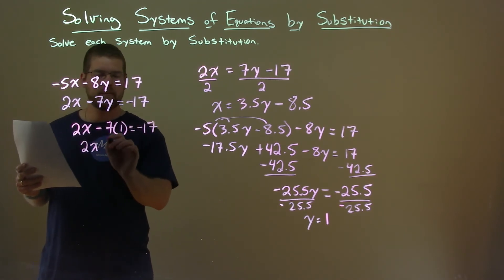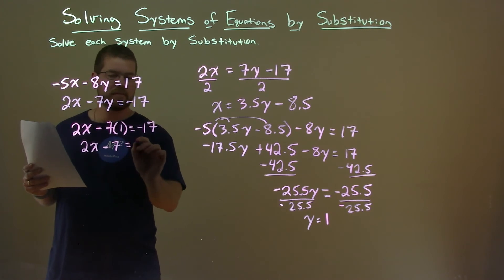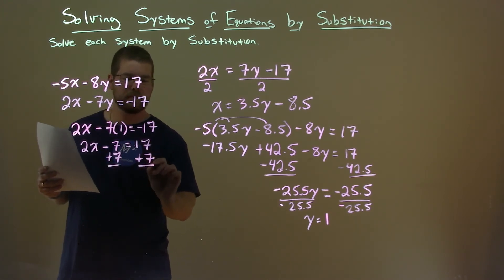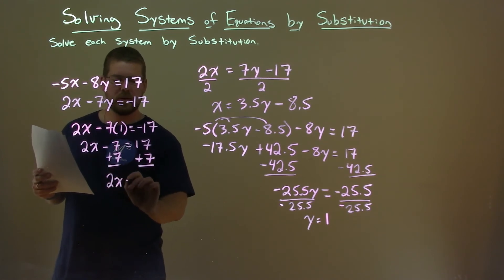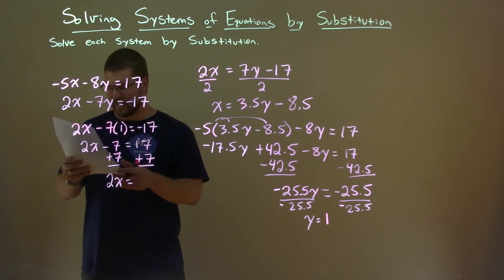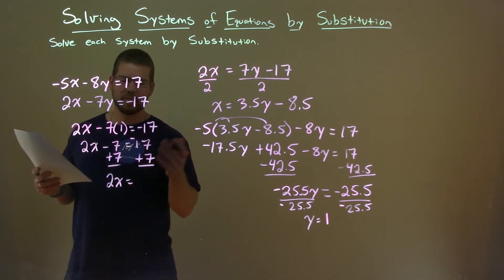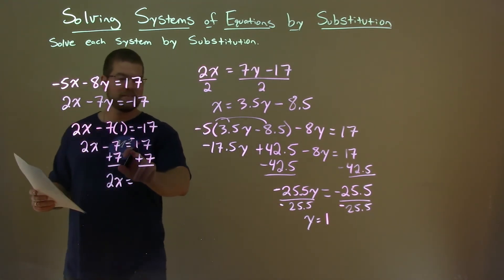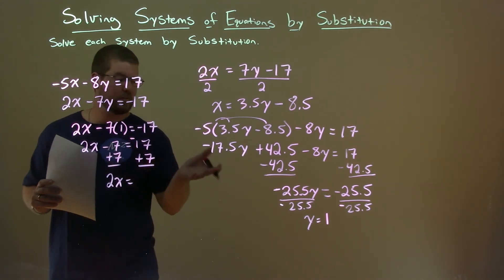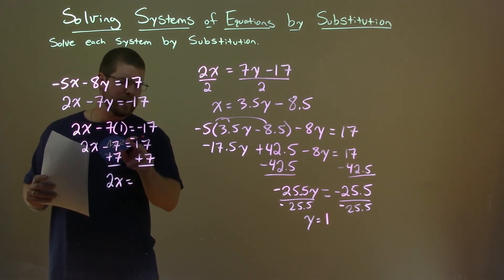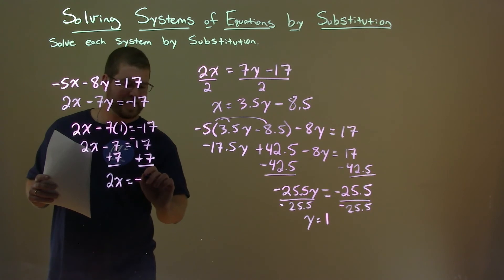2x here minus, well, 7 times 1 is 7 equals 17. Add 7 to both sides. And 2x here equals 17 plus a 7. Oh my goodness, this is -17. I keep messing up my negatives. Oof! -17 plus 7. Oof, this video's been bad. Sorry. -17 plus 7 is -10.